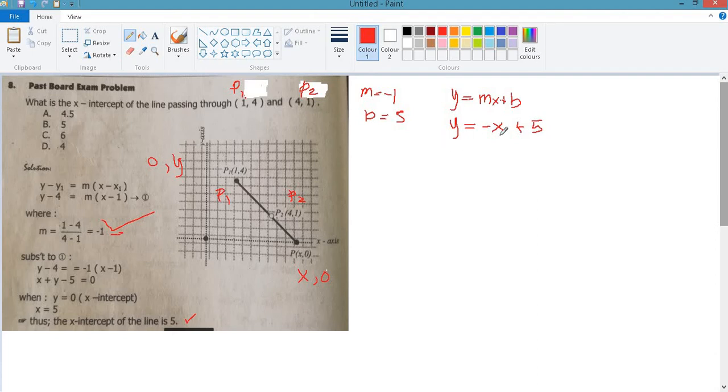Since the x-intercept is the point which touches the x-axis, the coordinates must be, therefore y will be 0, which is equal to negative x plus 5. Therefore x is equal to 5. The coordinates of x-intercept is 5,0.